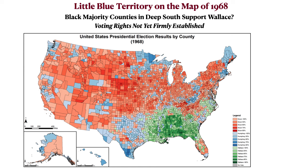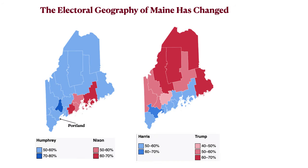I want to talk about a couple of states that have had their electoral geography inverted. In Maine in 1968, the Democratic candidate Humphrey did best in the more rural, sparsely populated parts of the state, while Nixon won the coastal area and central part with its fishing-oriented economy. But in the Harris-Trump election of 2024, it's almost flipped: Harris did very well in the coastal counties, best in the county containing Portland, while the interior more sparsely populated areas went overwhelmingly for Trump.